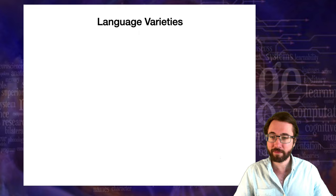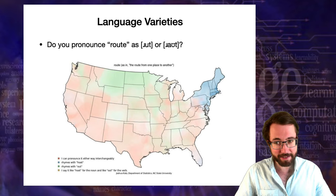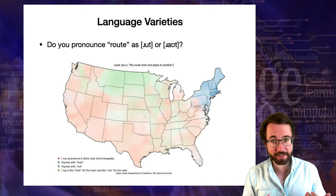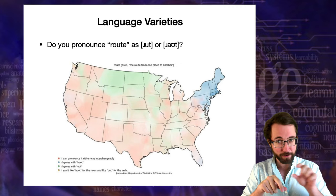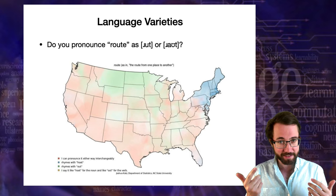Here's another interesting example: the word R-O-U-T-E — do you pronounce that as root or route? In the red areas, you say either one. In the blue areas, it's always root. In the green areas, it's always route. Interestingly, the geographical region you're from doesn't fully determine your pronunciation of every word. Within the red regions there's still variance — you could say root sometimes and route sometimes. These two pronunciations are mixed up even within a particular dialect region.